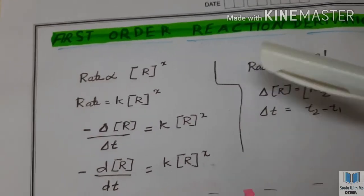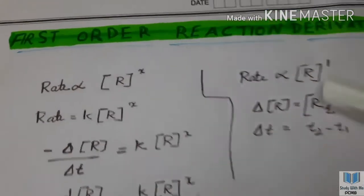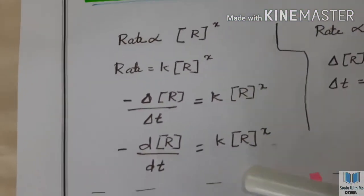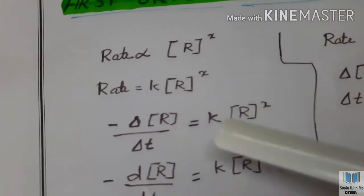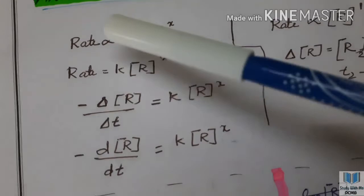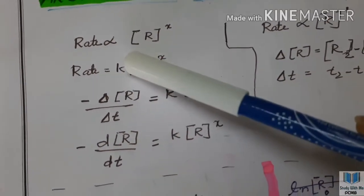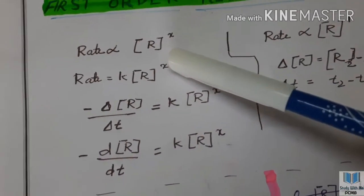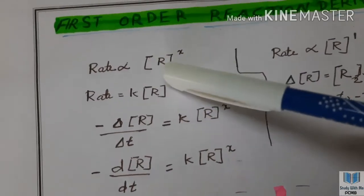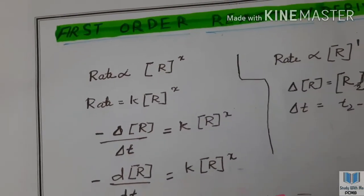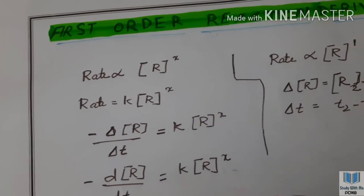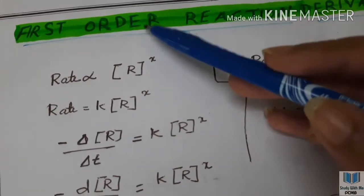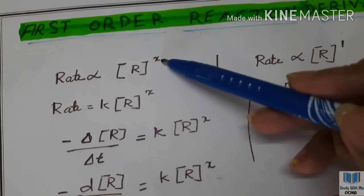I have seen some fundamental concepts. The rate is directly proportional to the concentration of the reactant. This is the power of x. In the first-order reaction, x will be 1.